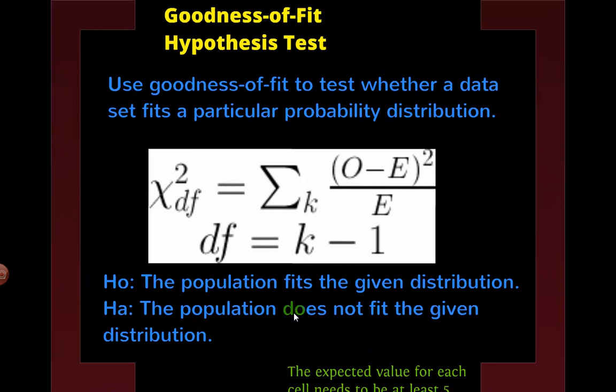Our goodness of fit hypothesis test — this is the first one, the GOF. We are looking to see if the data that we have fits a probability distribution that we've been given. They're going to give you a probability distribution and then a list of data, and you're going to look to see if that makes sense. Sometimes it's asking, are they evenly distributed? Other times they'll give you points and say, these are the things that show up.